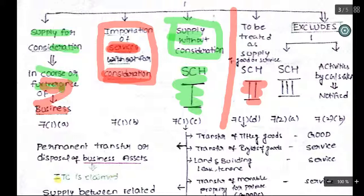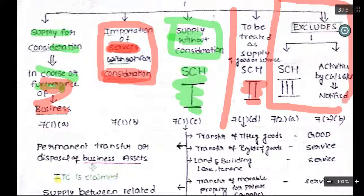Every act has exclusions. In GST also, there is an exclusion — that is Schedule 3 and activities prescribed or notified by the central government or state government. Schedule 3 contains items where, even though there is a supply of goods and services, these are not to be treated as supply of goods and services.